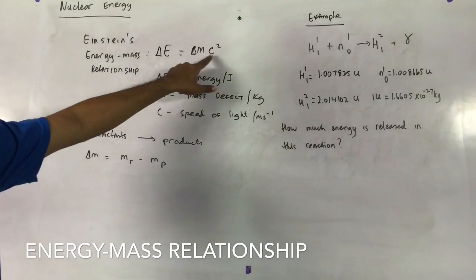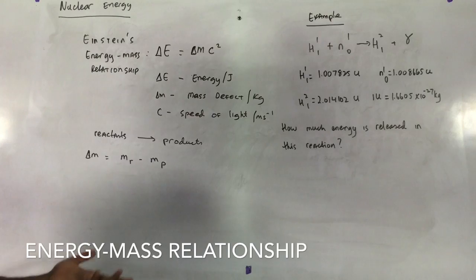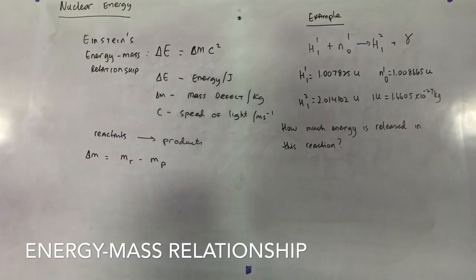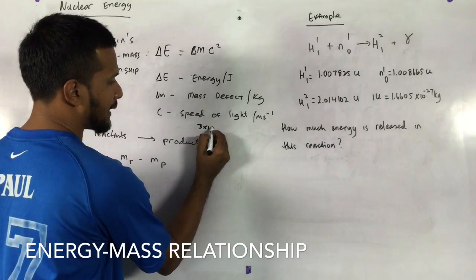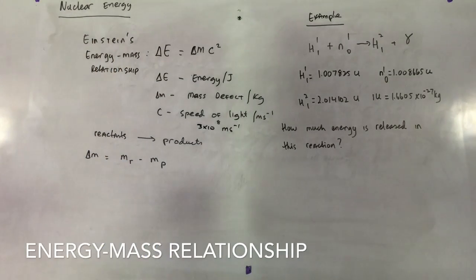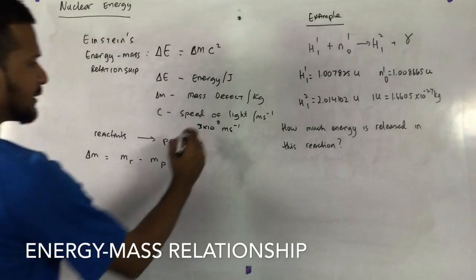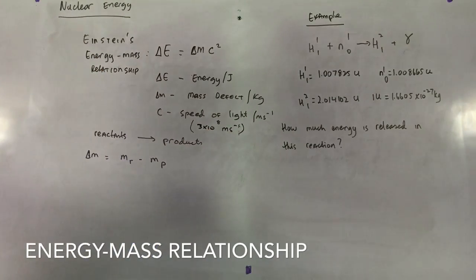How do we find, well we all know C. C is the speed of light and the speed of light is what? 3 by 10 to the power of 8, remember that? 3 by 10 to the power of 8 meters per second, right? So we have the speed of light and we have to find our mass defect. What is mass defect?